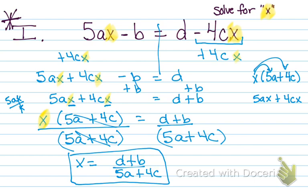Now, if you had done something differently first — like maybe moved over the 5AX and subtracted it first — you would have gotten something a little bit different: X equals negative B minus D over negative 4C minus 5A. Those are actually equivalent. So when you're looking at the answer key, this is the complete opposite of signs, and that is perfectly acceptable. Make sure if you get something a little different, it may just be a complete opposite sign issue — both are acceptable.